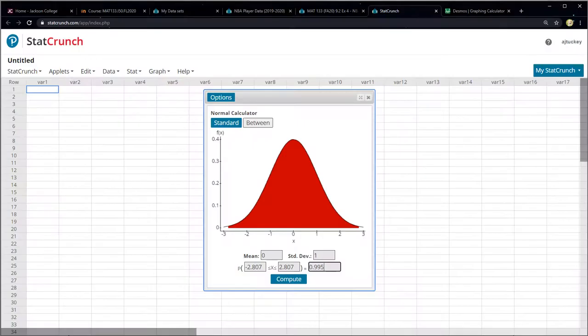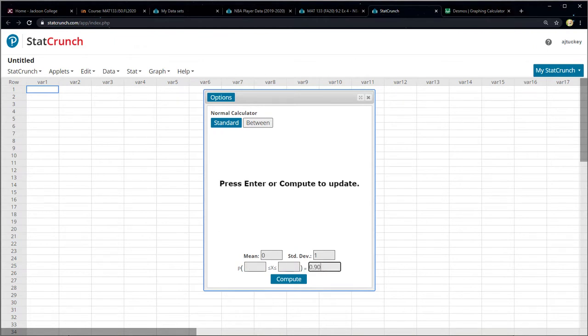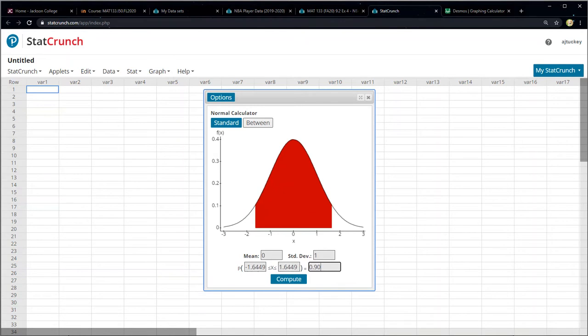So in StatCrunch, I can say, look, I want a 90%. It's a Z, so the mean is 0, standard deviation is 1. I just type 0.90, enter, and there it is, right? So I know that it's 1.645.